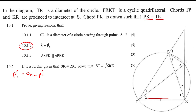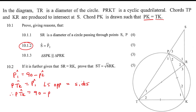Now if you look in this triangle, this is an isosceles triangle. So the angles opposite those equal sides would have to be equal — that would be this entire angle and this angle. So P1 would have to be the same as angle PTK, because of angles opposite equal sides. Therefore angle PTK is also 90 minus P2. Now if you look at this other triangle, we know TR is a diameter, which means the angle at K, angle TKR, must be 90 because of angles in a semicircle.